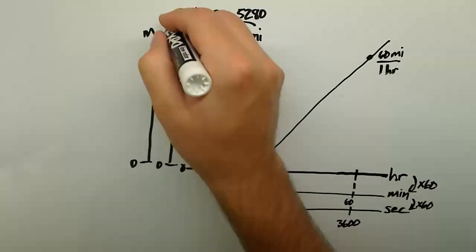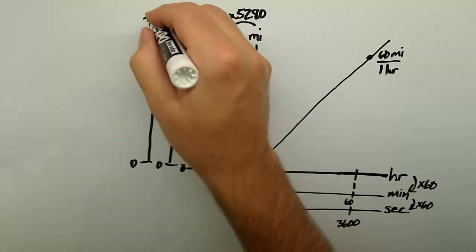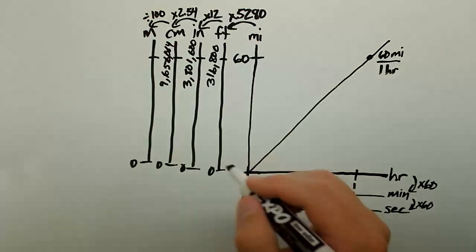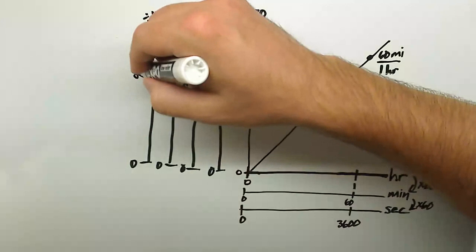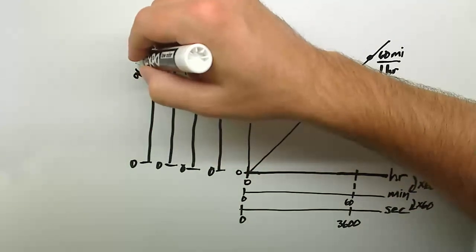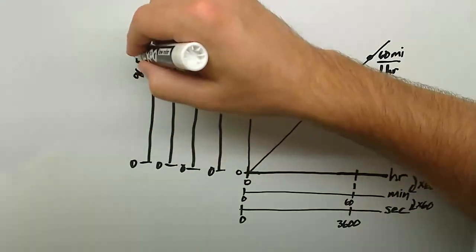Lastly, because 100 centimeters is 1 meter, I divide 9,656,064 centimeters by 100 to get 96,560.64 meters.